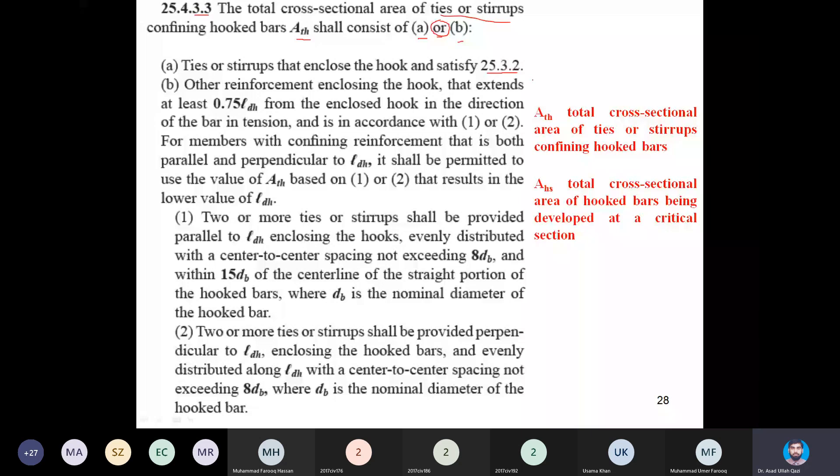In B, actually they are further elaborating how this area will be calculated and up to how much length ties or stirrups area will be estimated. It is quite useful because pictures are also available with reference to B part. Other reinforcement enclosing the hook - what is B? Other reinforcement enclosing the hook that extends at least 75 percent of the LDH from the enclosed hook in the direction of bar in tension and is in accordance with 1 or 2. And 1 or 2 is given underneath.